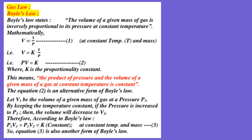Equation number 1 is at constant temperature and mass of gas. Inversely proportional means 1 divided by. We see inversely proportional, so if we simplify this equation, V is equal to K times 1 by P. The proportionality sign is replaced by equals and a constant. So the constant K is the proportionality constant. If we simplify this equation, V is equal to K — that gives us equation number 2.